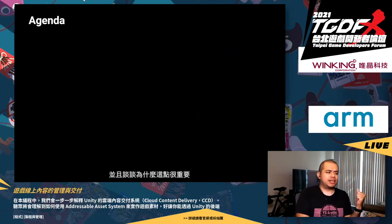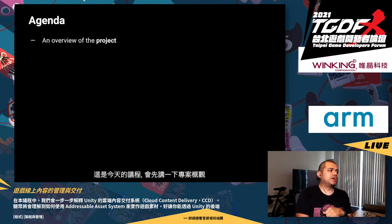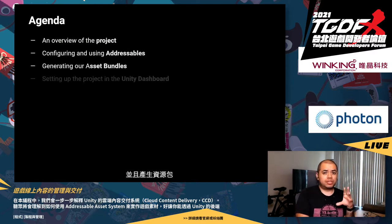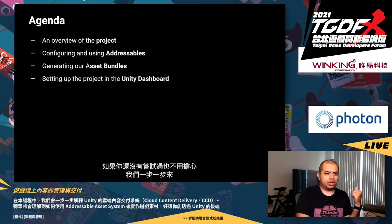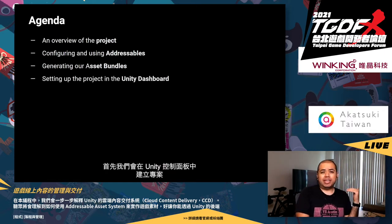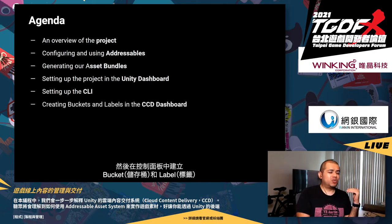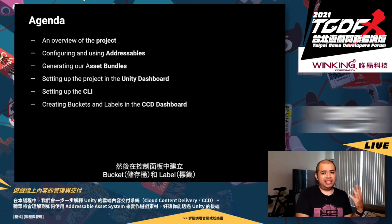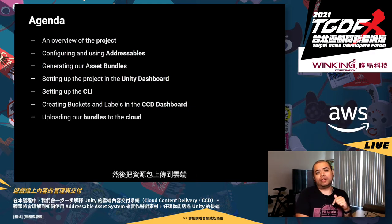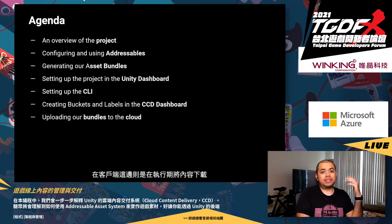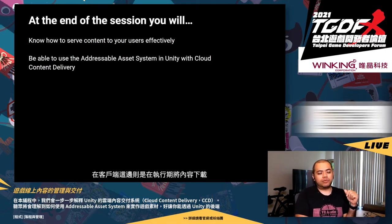We're going to talk about why that is important. This is the agenda: we'll get an overview of the project, configure addressables, generate asset bundles, set up the project in the Unity dashboard, set up the command line interface, create buckets and labels in the dashboard, upload our bundles to the cloud, and then download the content at runtime from our client.